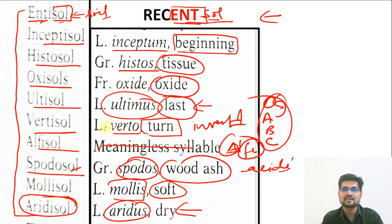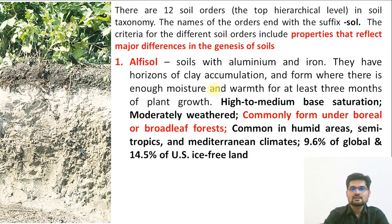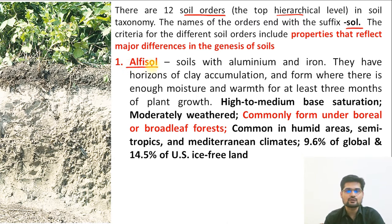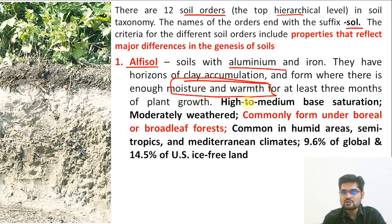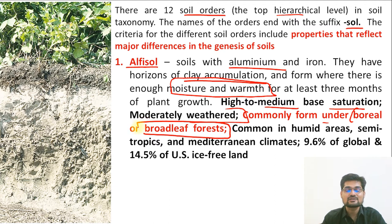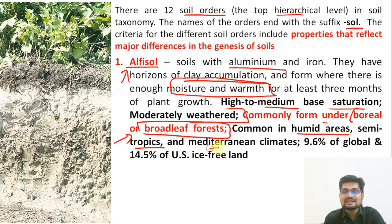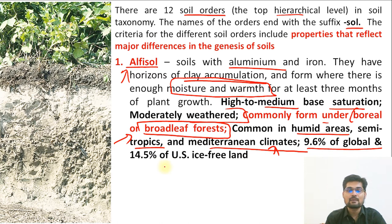There are 12 soil orders in the USDA hierarchy. First is Alfisol — iron and aluminium containing soil. They have horizons of clay accumulation and form where there is enough moisture and warmth. They have high to medium base saturation, are moderately weathered, and commonly form under boreal or broad-leaf forests. Commonly found in humid areas, semi-tropics and Mediterranean climate, comprising about 9.6% of global soils and 14.5% of US ice-free land.